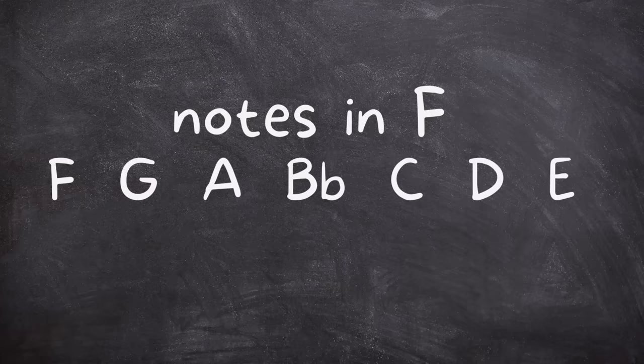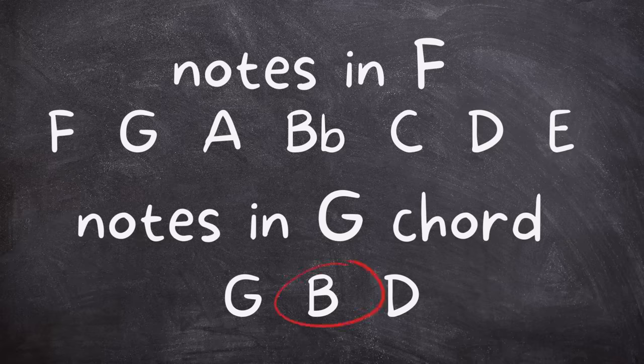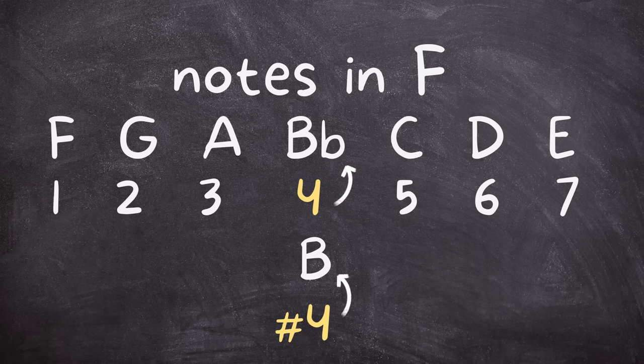It contains the note B natural, which we can also call the sharp 4 of the key. Here's what the Beatles know about how to use the II major chord: what you want to do next is go to the IV chord inside the key, which in this song is B♭ major. The reason is that we get this really beautiful chromatic motion from that B natural down to the B♭, and chromatic motion feels really, really good.